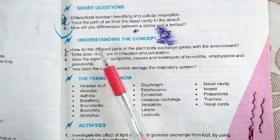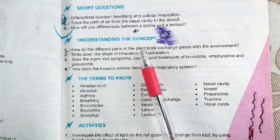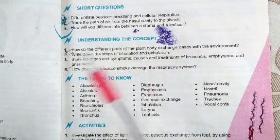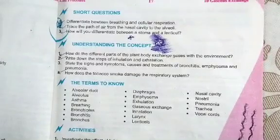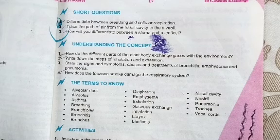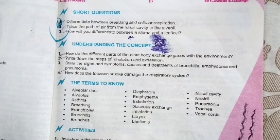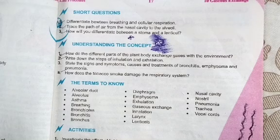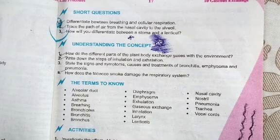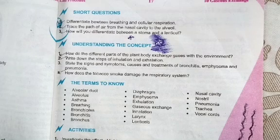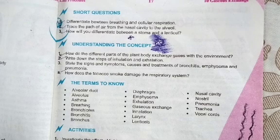Question four: how do different parts of the plant body exchange gases with the environment? Plants exchange gases through stomata, lenticels, and roots. Plants do not have specialized mechanized organs for gas exchange. Stomata function during both day and night. Roots exchange gases through their surface area. Lenticels are found in the cork tissues of old woody plants.